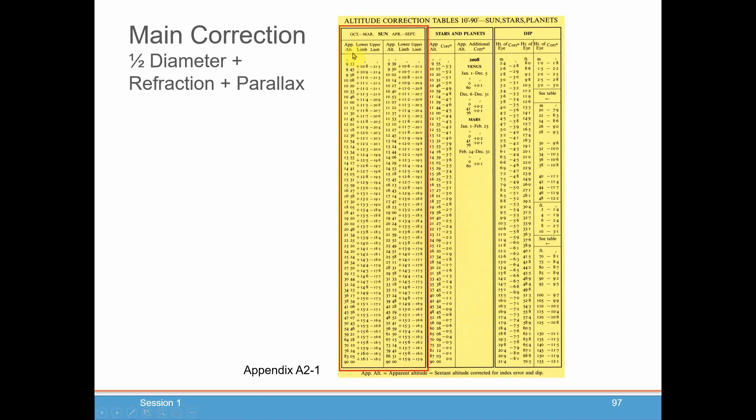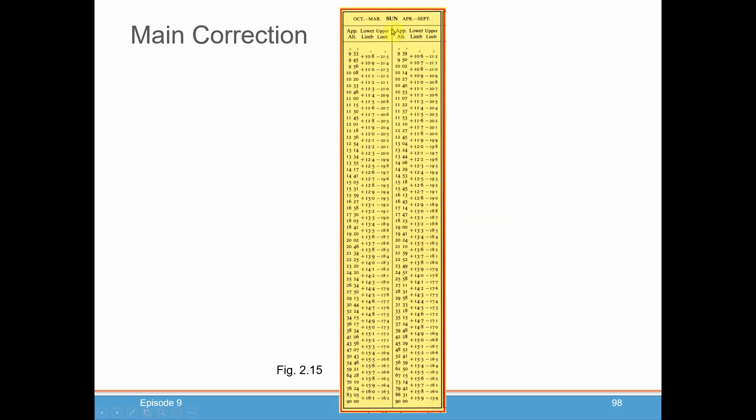So again, what you do here is you look for the apparent altitude, which we'll get to when we go through all the calculations, and you see where you fall in here, and you find the correction either plus if you're on the lower limb or minus if you're on the upper limb from your sextant angle. And again, just like with dip, if you err exactly at a particular value, you take the number that's above it.